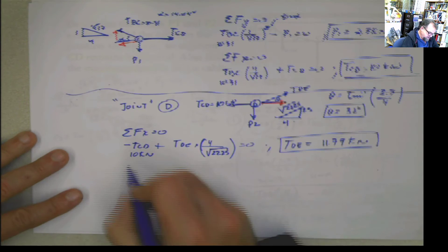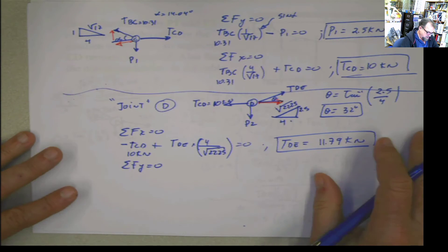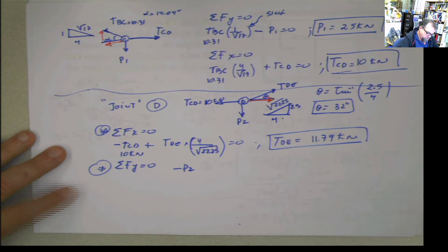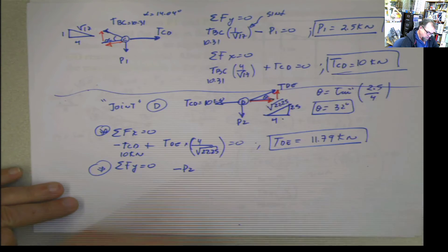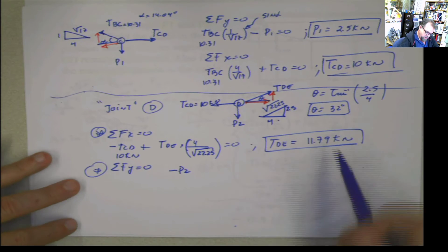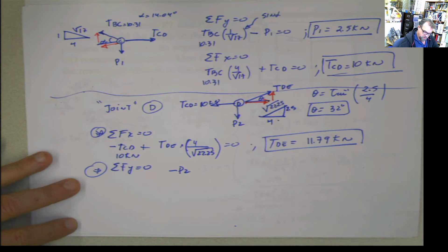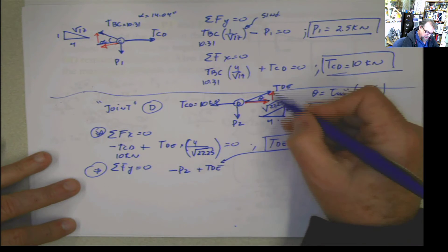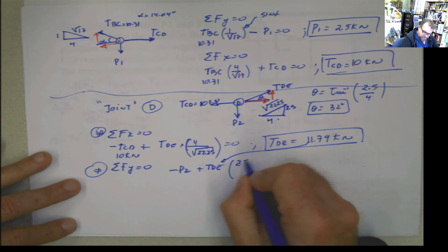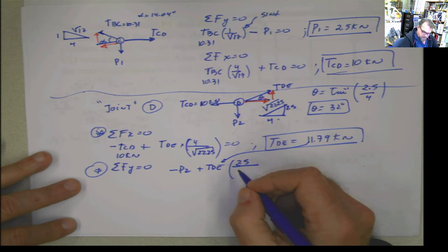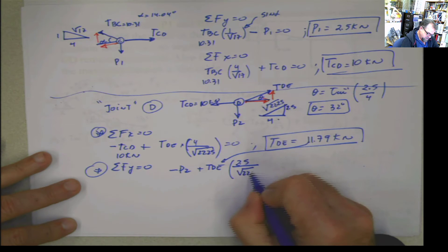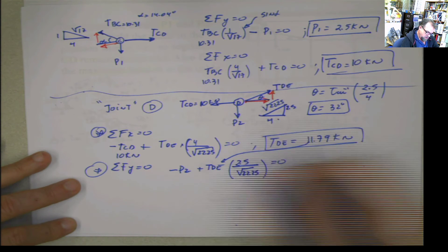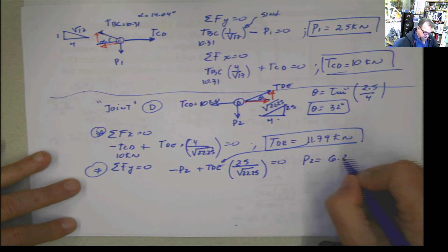Last but not least, summation of forces in y equals 0. When we do that, I have negative P2 plus this component of TDE. I already calculated TDE, so it's TDE multiplied by 2.5 divided by the square root of 22.25, equals 0. Plug this in and calculate for P2. P2 is 6.25 kilonewtons.